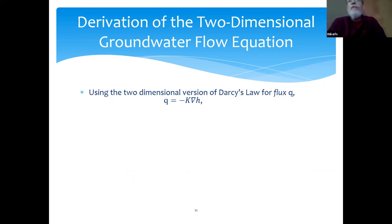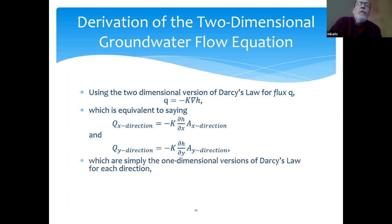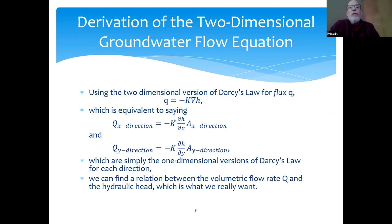Now, if you use the two-dimensional version of Darcy's law for flux, that's equivalent to saying that in the x direction, the flow is equal to minus K times the rate of change of head level with respect to x times the area, specifically in the x direction. And the flow rate in the y direction is equal to minus K times the derivative of h with respect to y times the cross-sectional area in the y direction, which is basically Darcy's law in one-dimensional versions in the x and y directions. So then you can find a relation between the volumetric flow rate Q and the hydraulic head, which is what we really want.